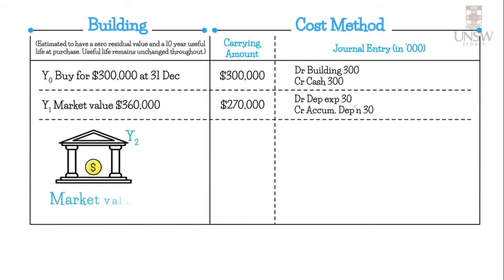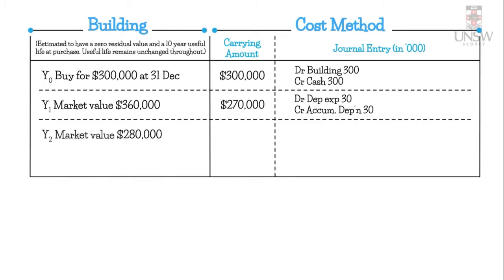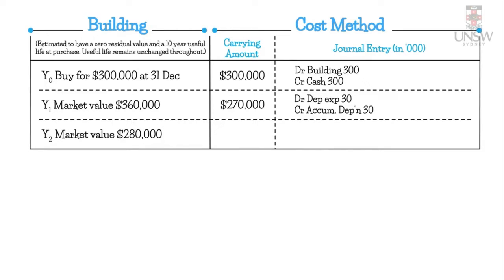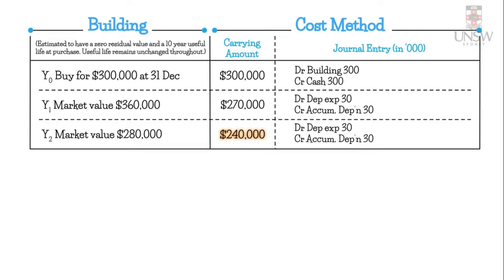In year two, an independent valuer says the market value has fallen to $280,000. We calculate our carrying amount using straight-line depreciation of $30,000 again: debit depreciation expense $30,000 and credit accumulated depreciation $30,000. Taking the $270,000 minus $30,000 gives a carrying amount of $240,000. This is lower than the market value of $280,000, so there is no impairment.